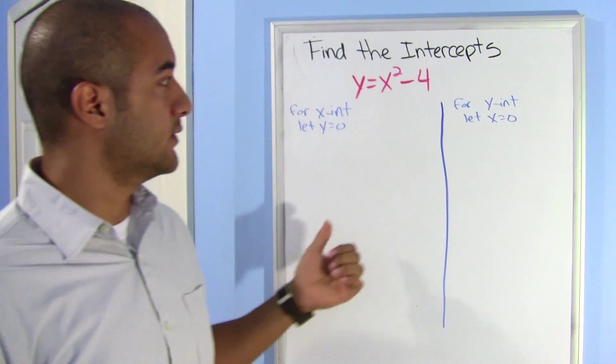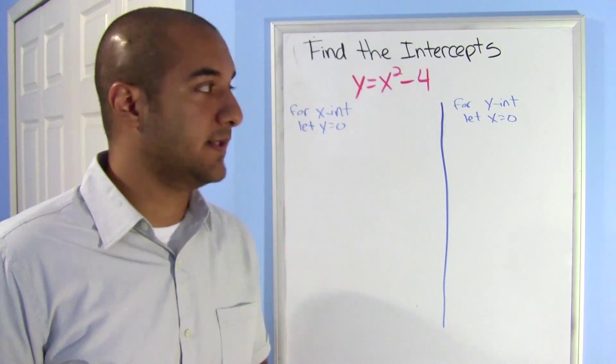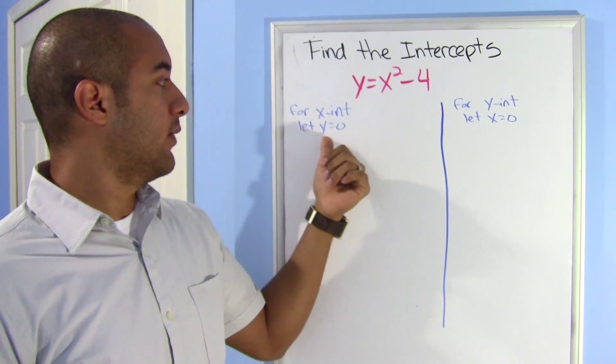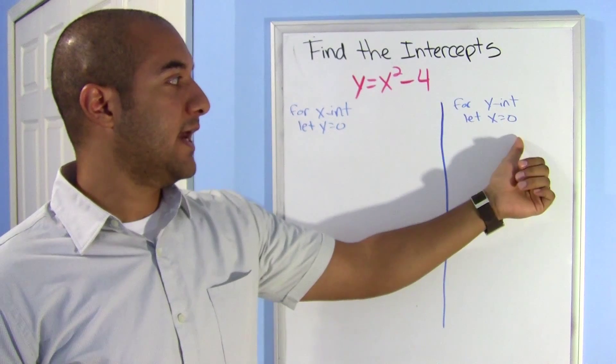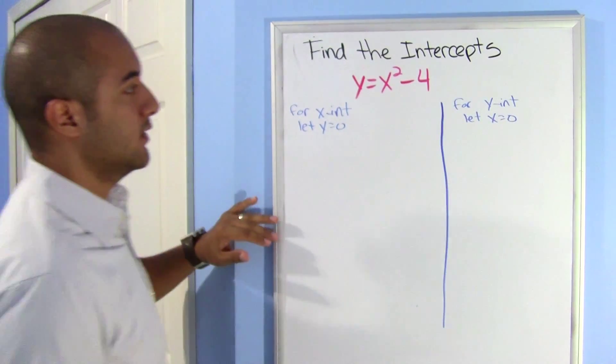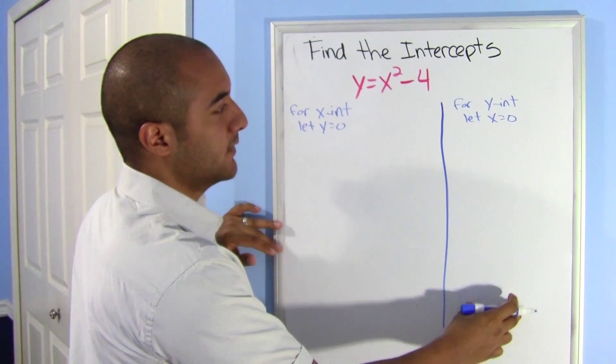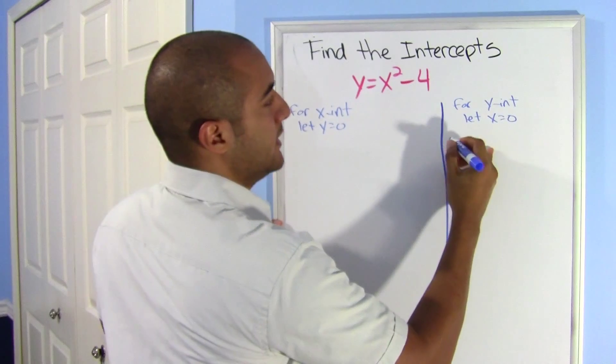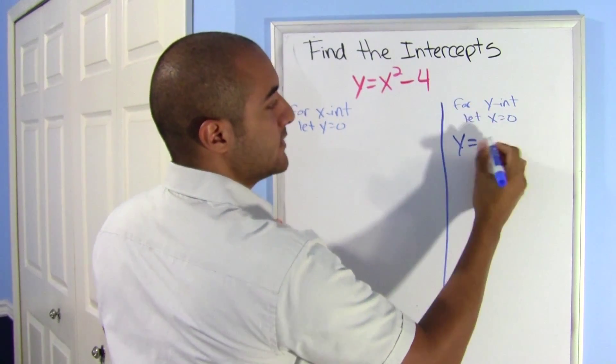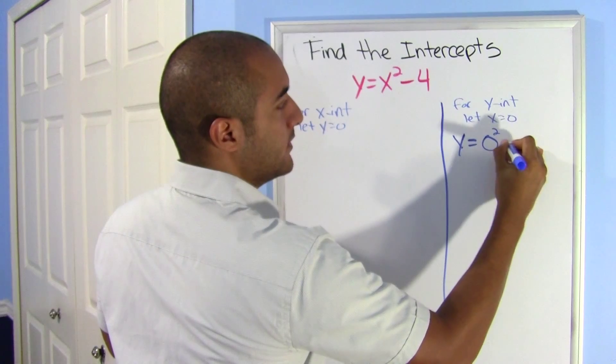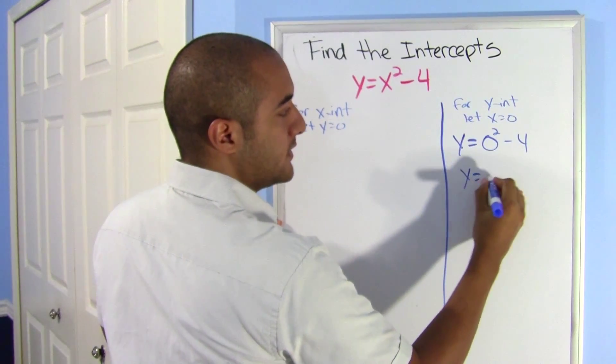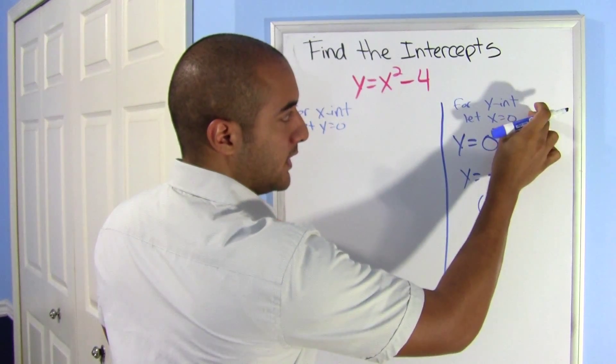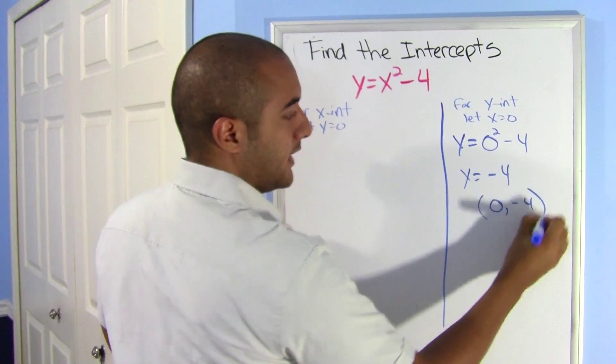What about this one? This one says y equals x squared minus 4, and they want us to find the intercepts. So same thing, I split it up into 2. I let my y equals 0 here for my x-intercept, and my x equals 0 for my y-intercept. I'm going to do this one first because I already know it's a little bit easier. Let's see what happens. y equals, my x is 0, so 0 squared minus 4, that's just y equals negative 4.